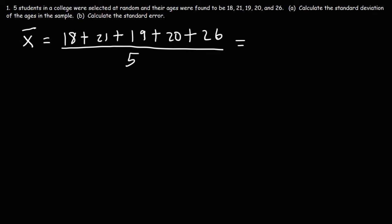18 plus 21 plus 19 plus 20 plus 26. That gives us a sum of 104. 104 divided by 5 is 20.8. So this is the average age of the individuals in this sample.